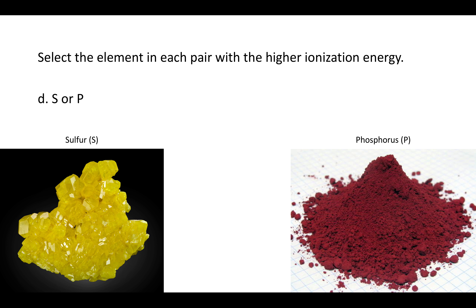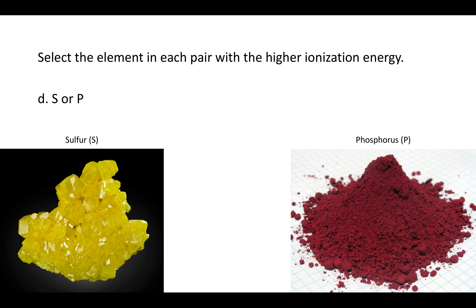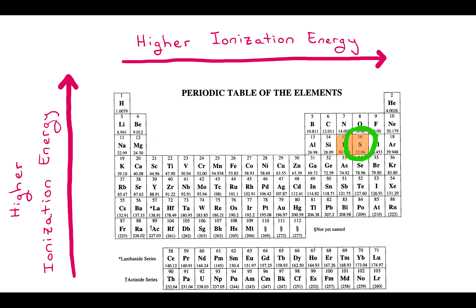Which has a higher ionization energy — sulfur or phosphorus? Sulfur is here, phosphorus is just to the left. Because sulfur is further to the right, it has the higher ionization energy. It's harder to rip an electron off of a sulfur atom than it is to rip one off of a phosphorus atom.